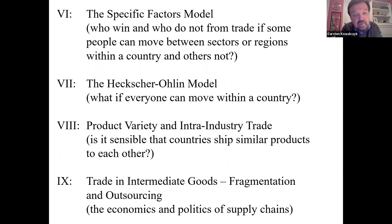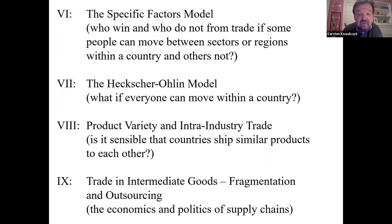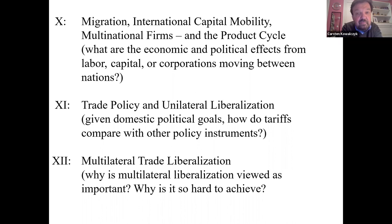In Roman numeral VIII, we'll ask whether it's sensible that countries ship similar products to each other — for example, cars going two ways — with many industrial or agricultural products traveling between two countries in opposite directions. We'll also look at trading intermediate goods, fragmentation and outsourcing, which covers the economics and associated political economy — the politics of supply chains. What are the economic and political effects from labor, capital, or corporations moving between nations?